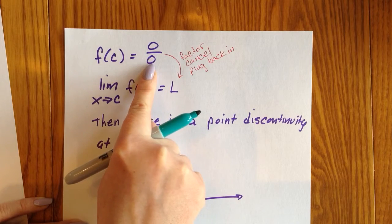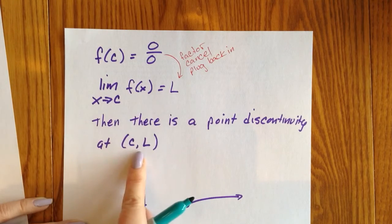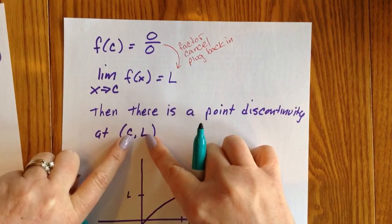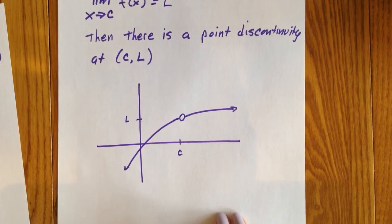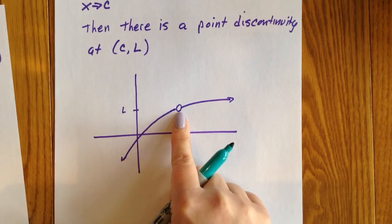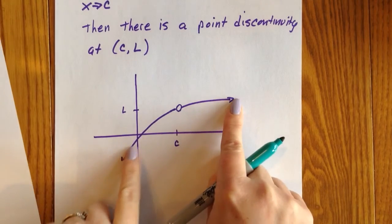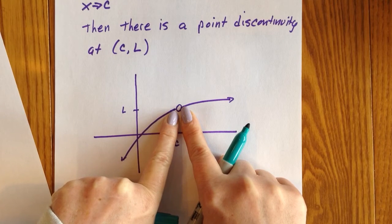The function is undefined, but the limit exists. If the function is undefined, but the limit exists, then there is a point discontinuity, and the coordinates of the point discontinuity are c, l. Graphically speaking, the graph has a point missing. The function is undefined, but the limit values are approaching it.